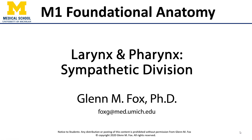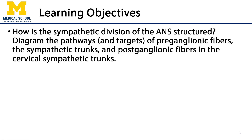Let's talk about the sympathetic division. In this video, we'll discuss the sympathetic division of the autonomic nervous system, how it's structured, its pathways and targets of preganglionic fibers, the sympathetic trunks, and postganglionic fibers of the cervical sympathetic trunks.